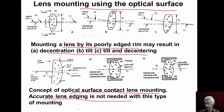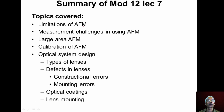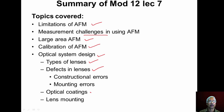With this we conclude module 12, lecture 7. In this lecture we discussed limitations of AFM, measurement challenges associated with AFM, large area AFM, calibration of AFM, and started the discussion on optical system design, covering types of lenses, defects in lenses, optical coatings, and how to mount lenses in a barrel. In the next lecture we will continue the discussion on optical system design.